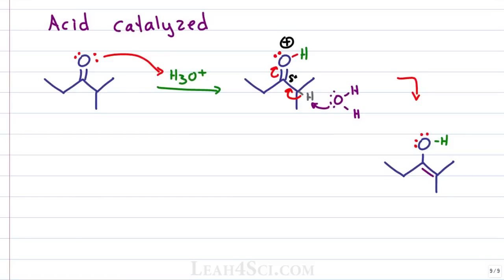If you look at the enol intermediate, you'll see that we have a very substituted pi bond given that we took a hydrogen from the tertiary carbon. If we took a hydrogen from the secondary carbon, the pi bond would be less substituted and therefore less stable. This is why the reaction happens at the more substituted alpha carbon. Another product of this step is the regeneration of hydronium, our acid catalyst.